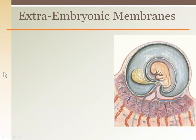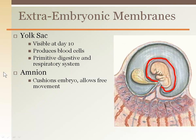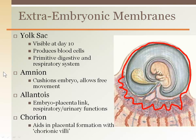The extra-embryonic membranes include the yolk sac, which helps to form some organ systems and contributes to early blood production. The amnion is a sac immediately around the embryo that cushions it while also allowing for movement. The allantois is a stalk that connects the embryo to the placenta, aiding in waste removal and the exchange of oxygen and carbon dioxide. The chorion entirely surrounds the baby, and as the baby grows, the amnion fuses with the chorion.